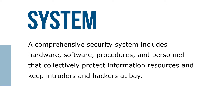A comprehensive security system includes hardware, software, procedures, and personnel that collectively protect information resources and keep intruders and hackers at bay. There are three important aspects of computer and network security: confidentiality, integrity, and availability, collectively referred to as the CIA triangle.